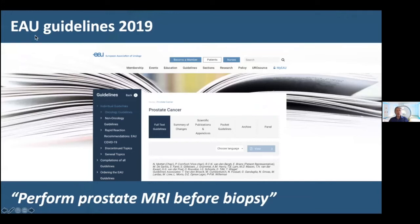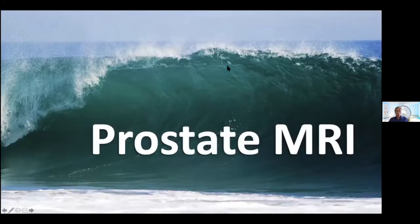To summarize the value of prostate MRI over trust biopsy: there is less overdiagnosis of insignificant cancers and less delay in the right treatment, because now you can do a targeted biopsy and hit the most aggressive part of the tumor. Therefore, the EAU guidelines in 2019 changed, stating that you should perform MRI before any biopsy. This, of course, leads to a tsunami of prostate MRIs, because all patients that would have had a TRUS biopsy will now be referred to MRI first.